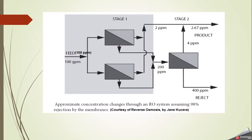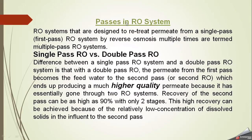Now we come to another important term: passes. People often confuse stages and passes. An RO system designed to retreat permeate from a single pass RO system by reverse osmosis multiple times is termed a multiple pass RO system. The key difference is this: in stages, the concentrate from the first stage enters the second stage, but in passes, the permeate from the first pass becomes the feed water of the second pass. In stages we feed concentrate forward; in passes we feed permeate forward.